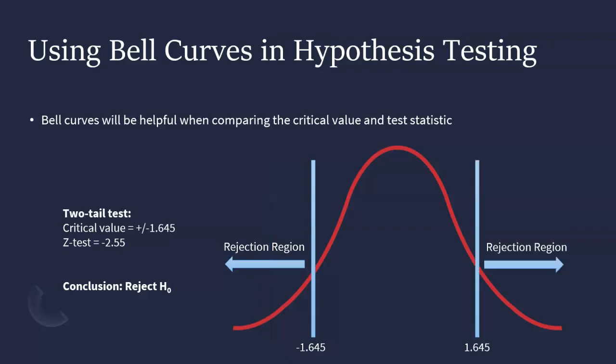So for two-tailed tests, since we have two critical values, the plus and the minus, we are going to have two rejection regions. So if anything falls to the left of negative 1.645, or if it falls to the right of positive 1.645, then it's falling within a rejection region, and we would once again have to reject our null hypothesis.